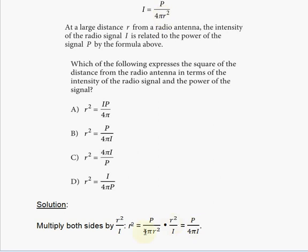So, you see what's happening here? When we multiply the right side, well, both sides are multiplied by r squared divided by i by this fraction. So, on the left side, we have the r squared, which is what we need for the answer here.